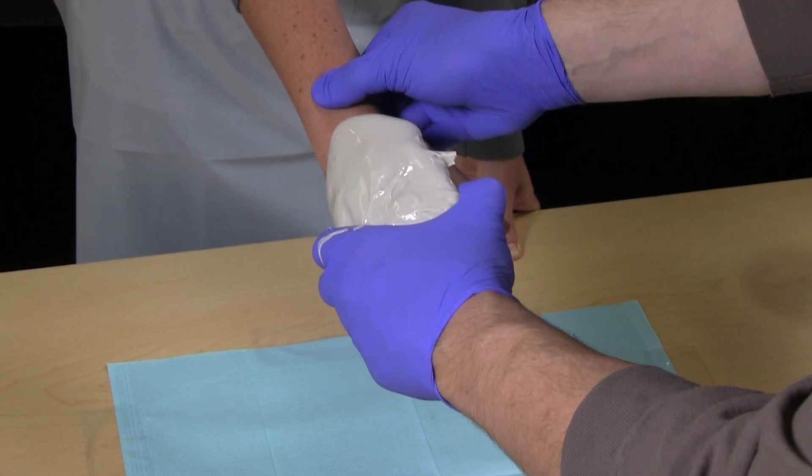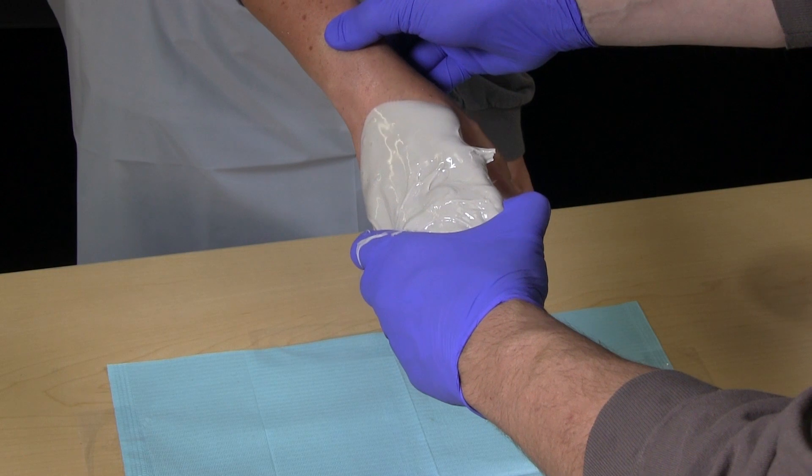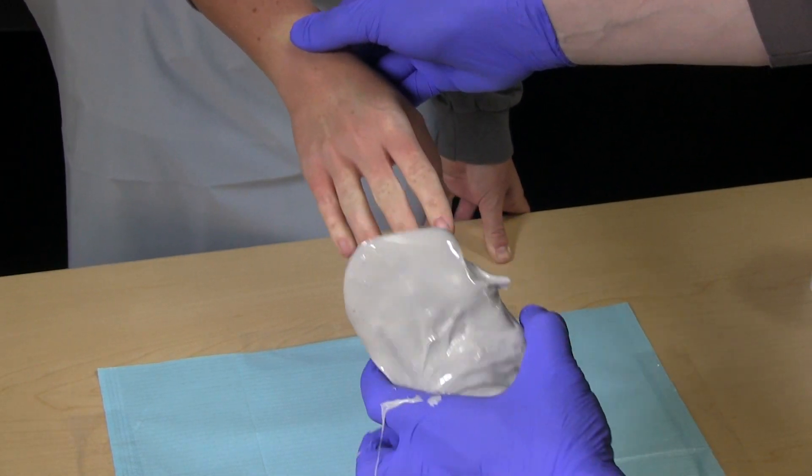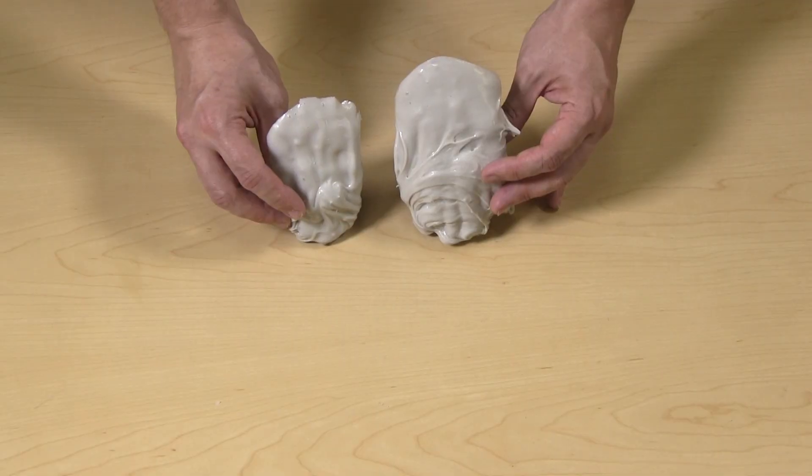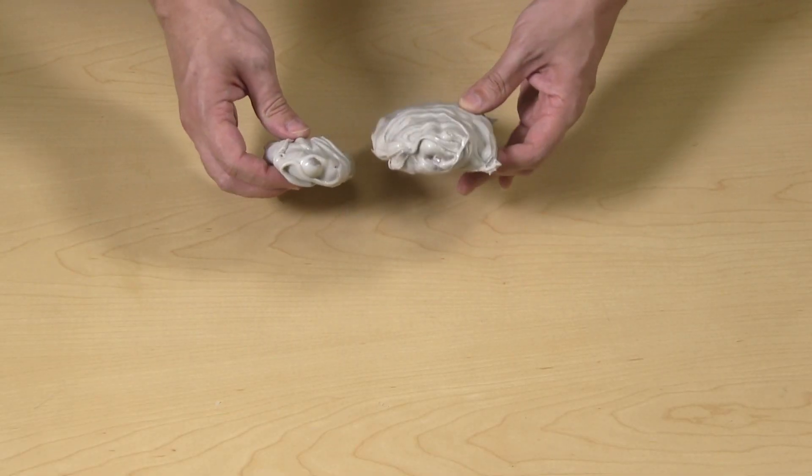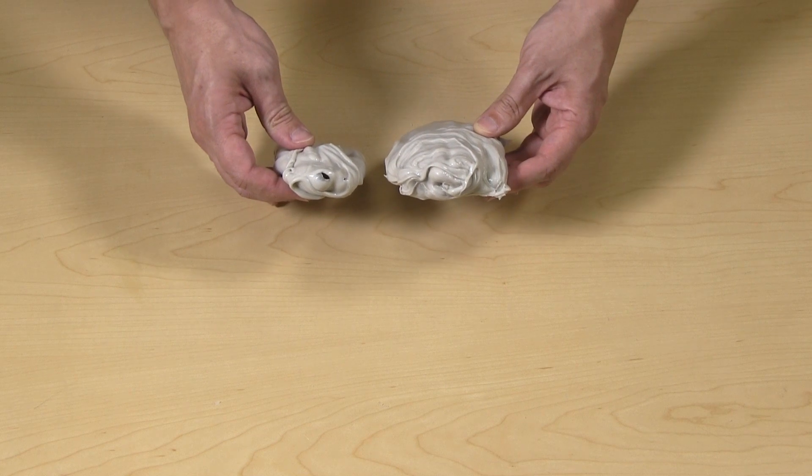When the customer feels ready, with the impression loose around the fingers, firmly grab the impression and slowly pull it off of the customer. Following these steps should result in a full impression with proper pose and appropriate coverage and no thin spots or holes.